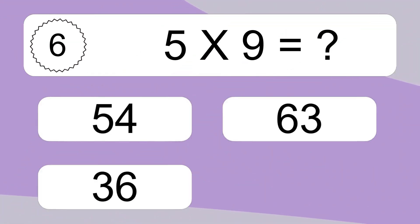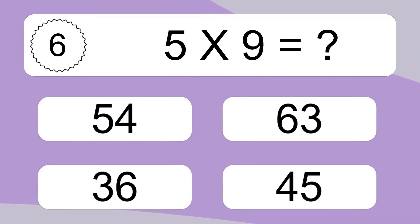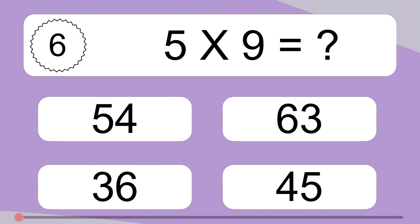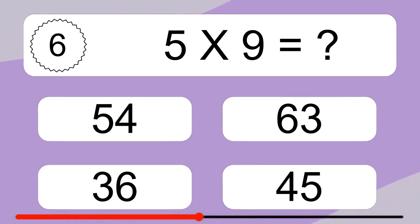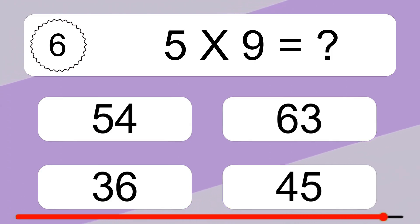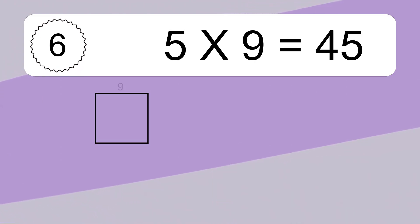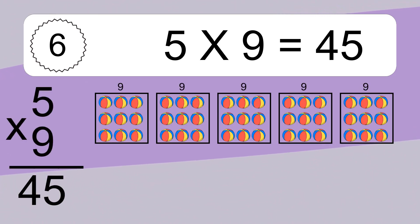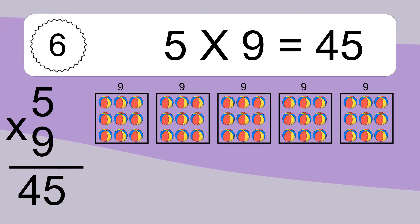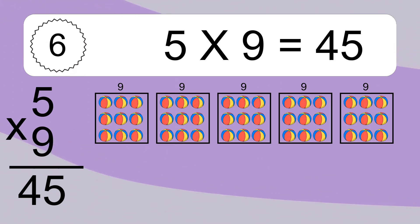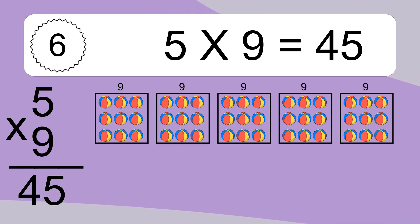5 times 9 equals what? 5 times 9 equals 45. We have 5 boxes, and each box has 9 colorful balls inside. If you count all the balls in all the boxes together, you will have 5 times 9 balls. This equals 45 balls.